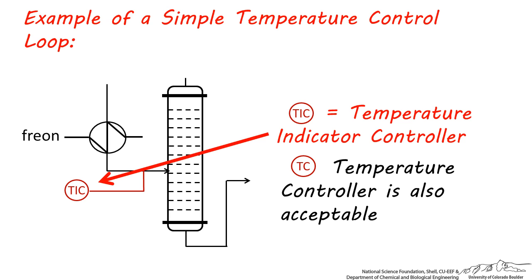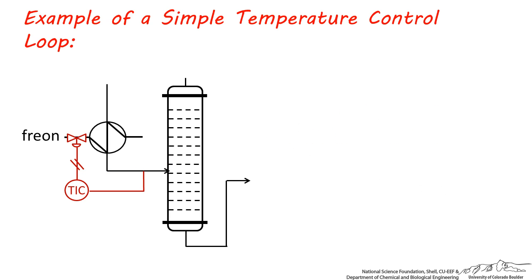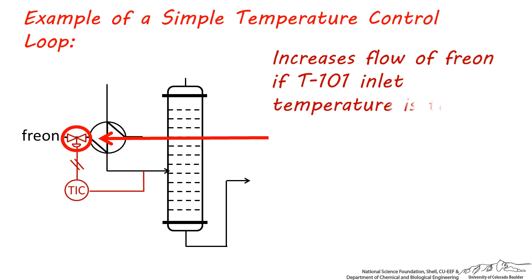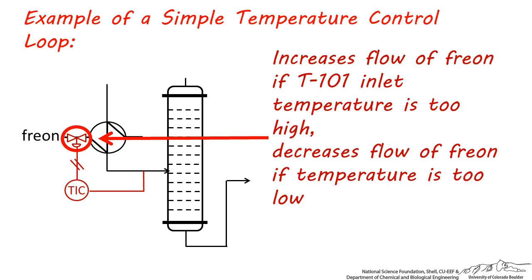If it's too high or too low, the controller will send a signal, which will open or close a control valve slightly. Let's talk for a moment about this valve and what it's doing. This control valve's job is to increase the flow of freon if the distillation column inlet temperature is too high, and decrease the freon flow rate if it's too low.